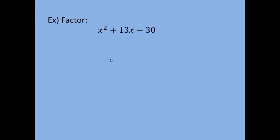We're going to factor x squared plus 13x minus 30. Whenever you factor, the first thing you should look for is a GCF. In this case there is no greatest common factor for all three terms, and there won't be for anything in this form because the coefficient of x squared is one — there is no number in front of it, so no common factor can be taken out.